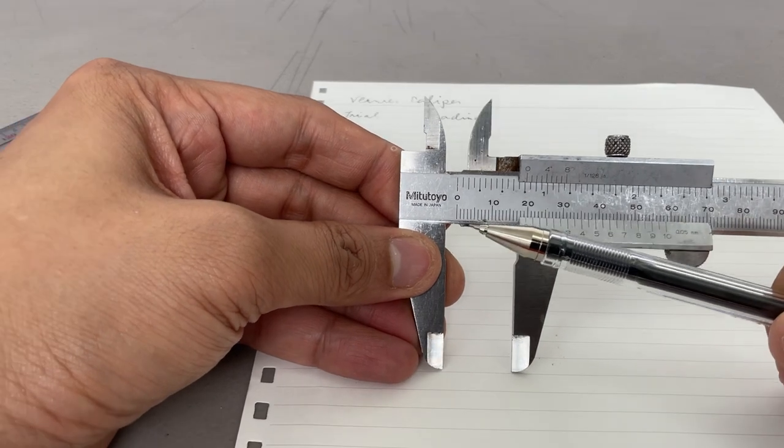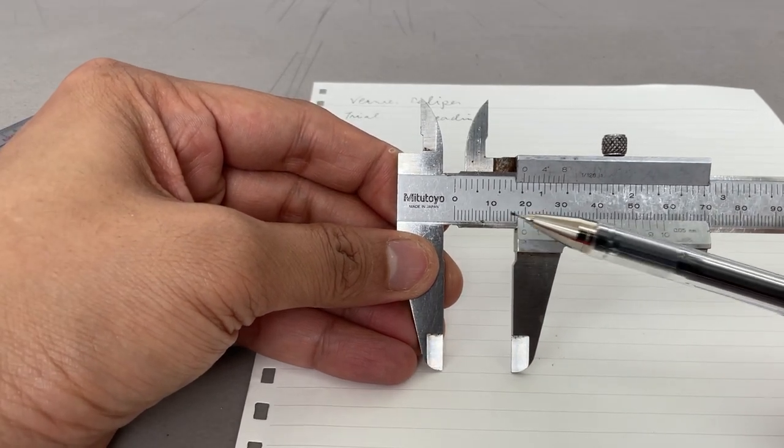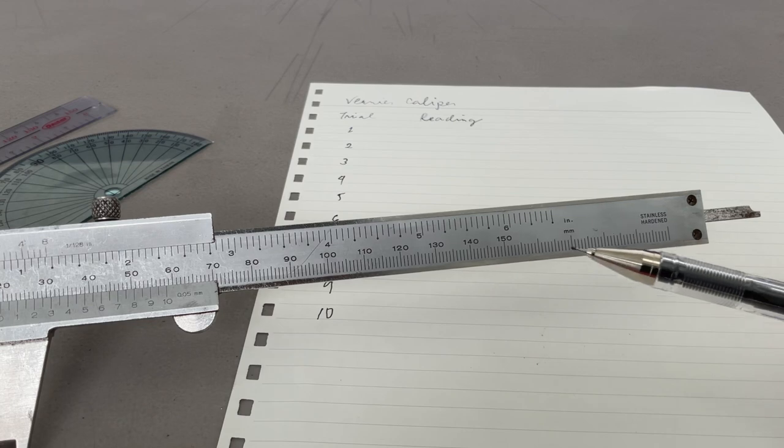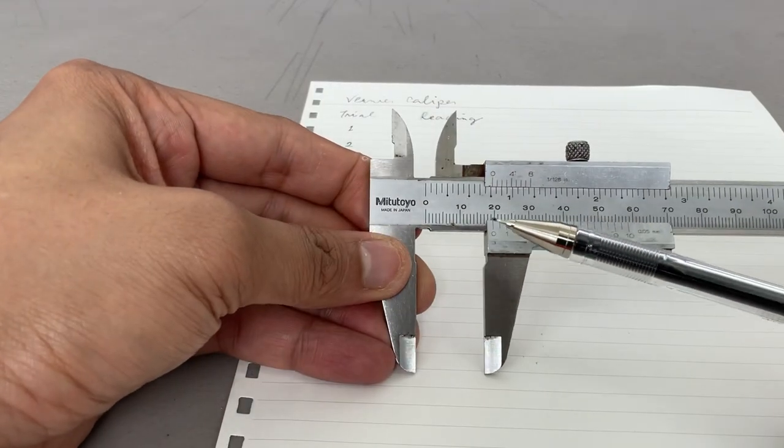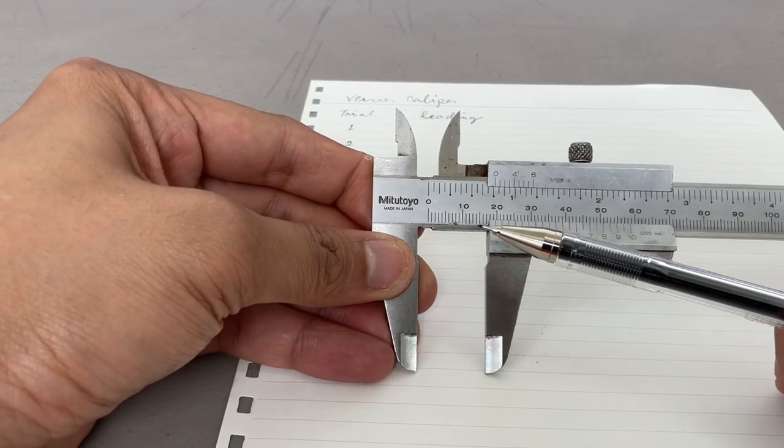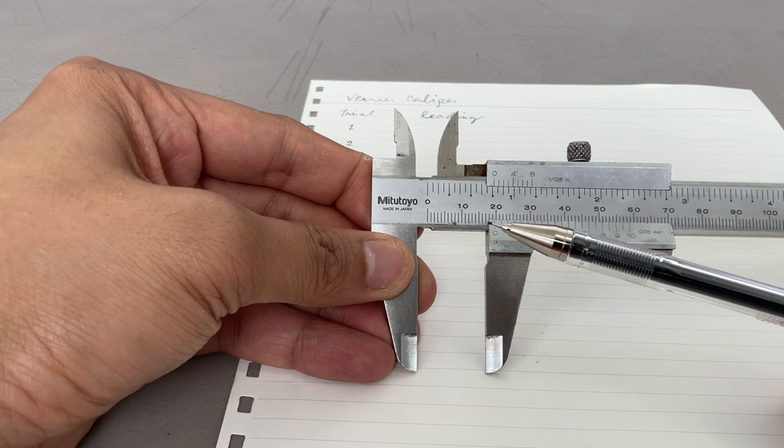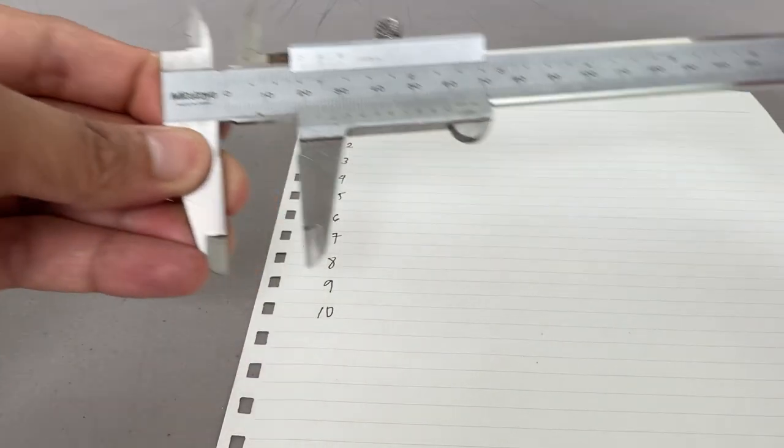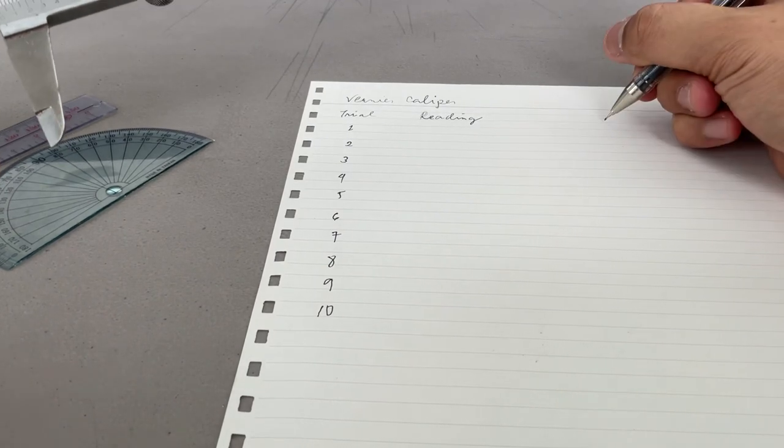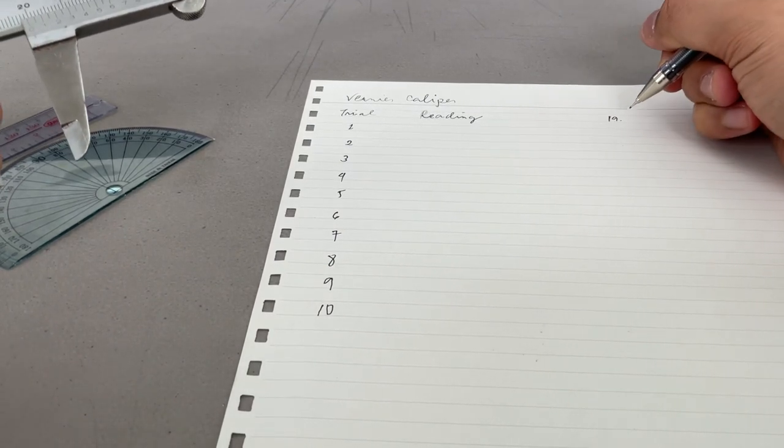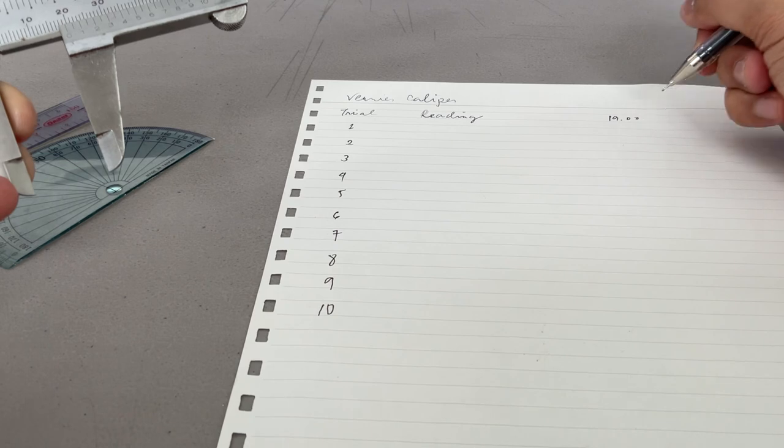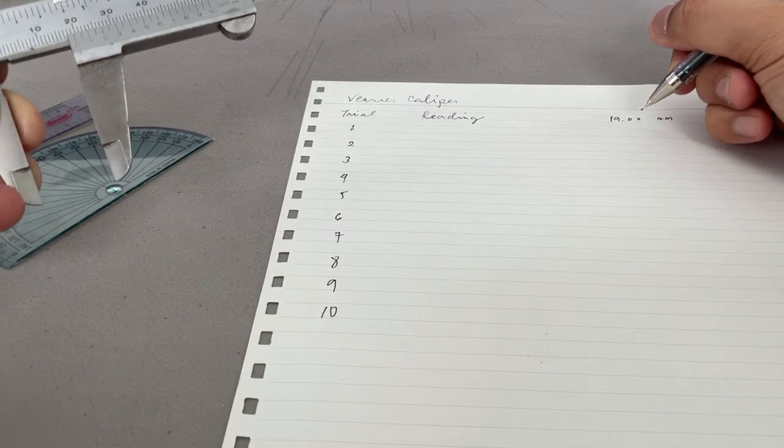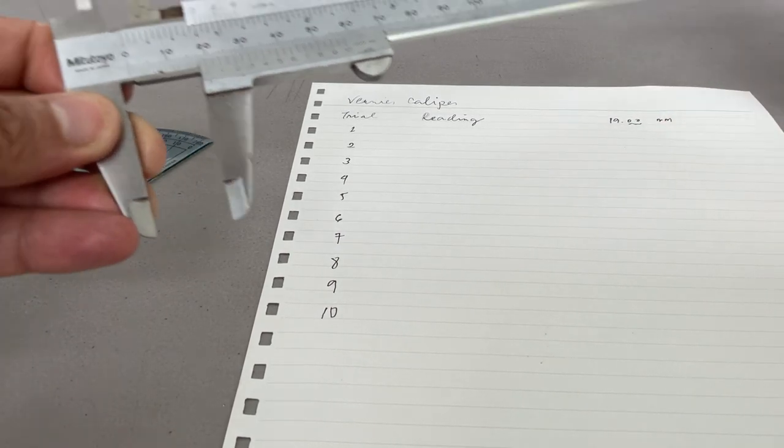Just for an example, so the way to read it is read the main scale first. The main scale says that it's 10 millimeter, by the way this is in millimeter. 10 millimeter, 15, 16, 17, 18, 19. So on the main scale it is 19 point something millimeter.